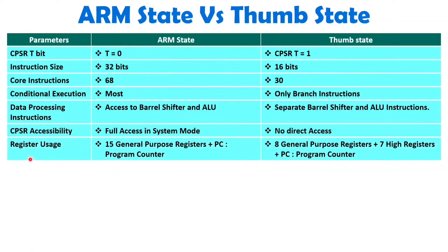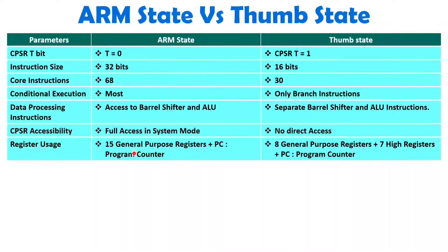Now let us understand how registers are provided in ARM state and Thumb state. In ARM state, we have a total of 16 registers: R0 to R15. Out of these, R15 is the program counter, and the remaining 15 are general-purpose registers available for programming.